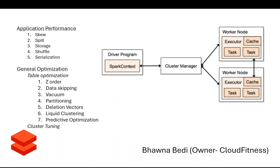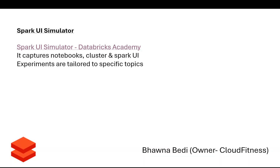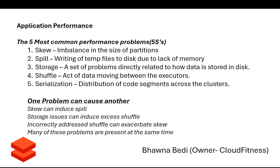As part of our previous sessions, we have discussed application performance and the general optimizations we can do — including multiple application performance techniques, enhancing performance using general optimization techniques such as stable optimization and cluster tuning. We have also discussed Spark architecture, checked the Spark UI simulator, and gone through the five most common problems with applications and how one problem can be caused by another.